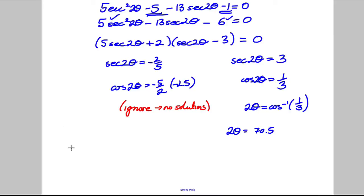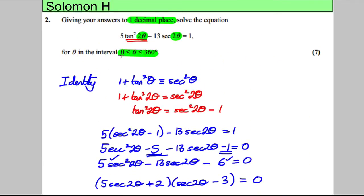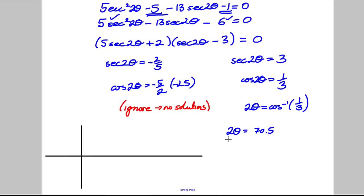Now, that's only my principal value. Let's draw the cos graph to get all the other possible values. Now, I know I'm going between 0 and 360, but because I've got 2 theta, I'm going to double that domain here. So, it's going to look something like this. That's 0 to 360, and this would be up to 720. So, here are my points here. That's 90, 180, 270, 360, 450, 540, 630, and lastly 720.